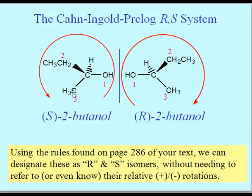The enantiomer on the left is labeled with a capital S and the other is R. There is a way for us to designate any pair of enantiomers — one being R and the other being S — if we know what to look for. It has to do with ranking the substituents on the carbon one through four and then noticing their relative positions.